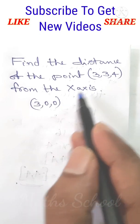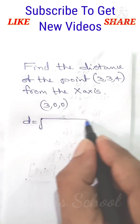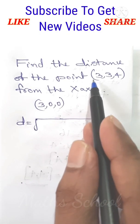The required distance is the distance between these two points. That is d equal to root of x2 minus x1 the whole square plus y2 minus y1 the whole square plus z2 minus z1 the whole square.